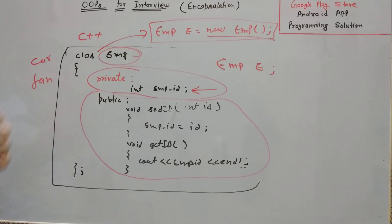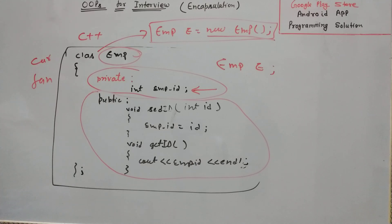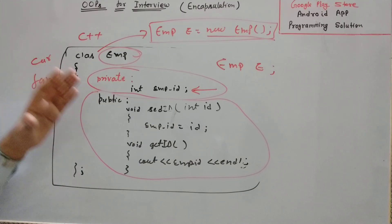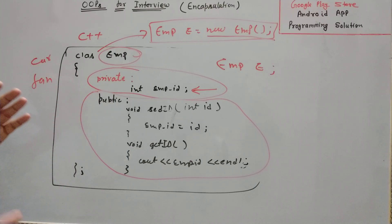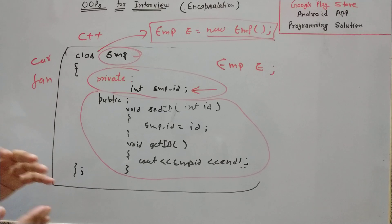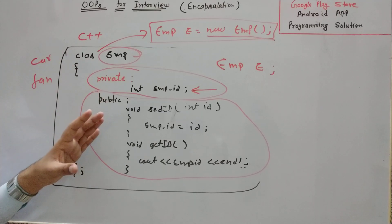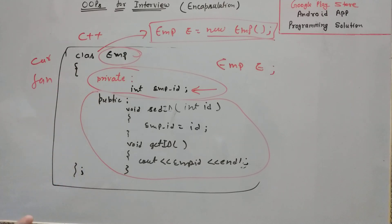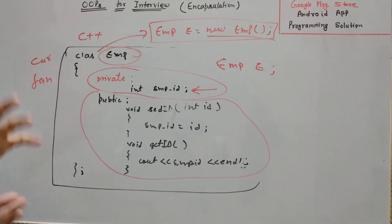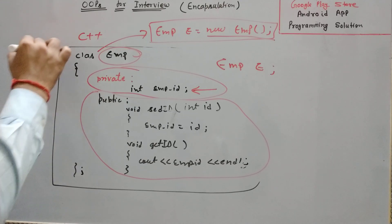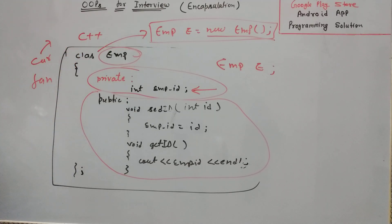I hope you got the point. Whenever you are facing an interview and they ask about encapsulation, start with the definition: encapsulation is the wrapping of data members and member functions into a single unit, and this single unit is known as class. Then give a real-life example such as a car, fan, or mobile phone — Audi for instance has some properties and some functionality, so Audi is an example of encapsulation.